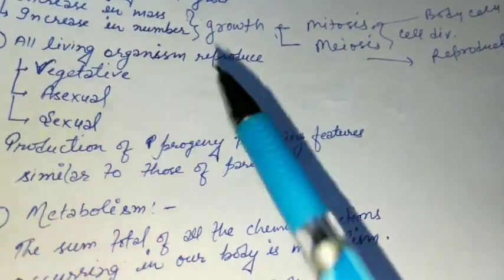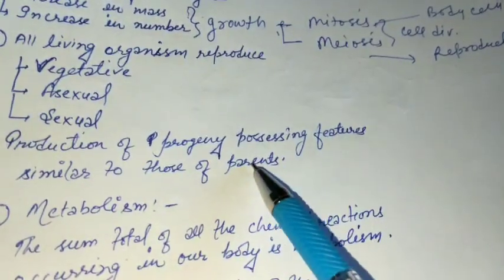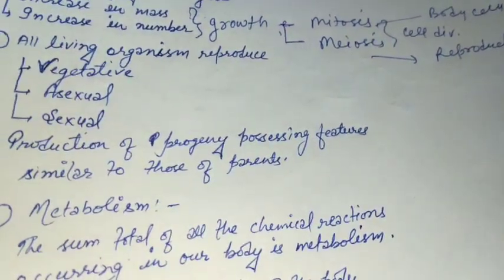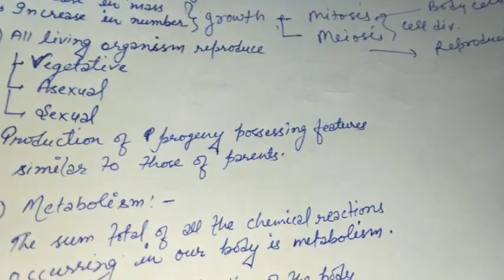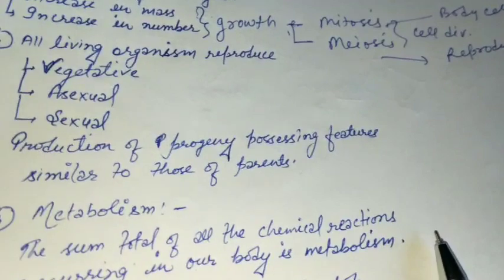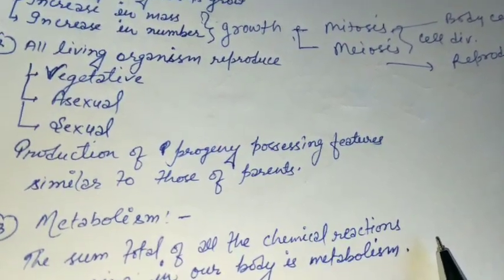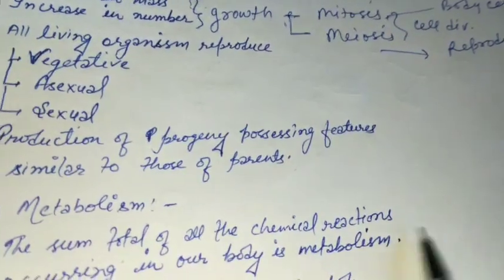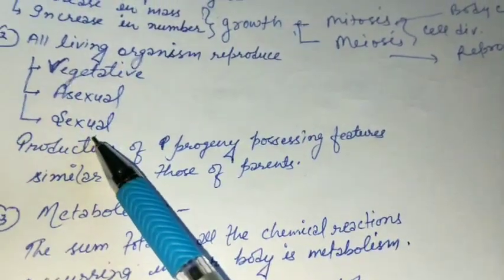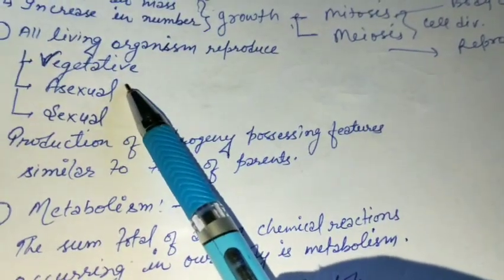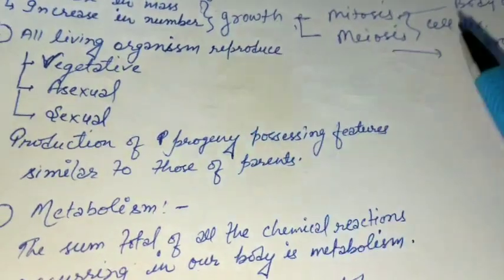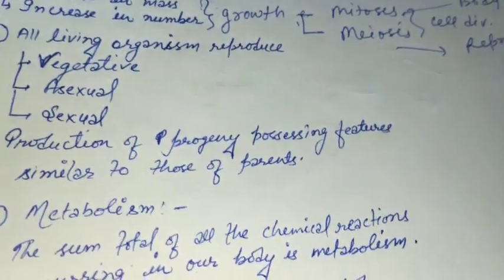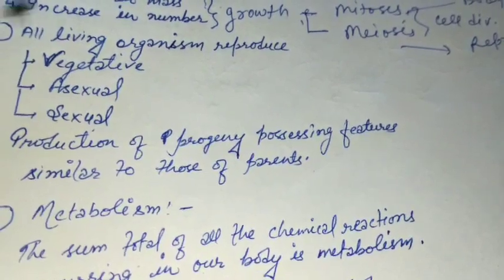Reproduction is the production of progeny possessing features similar to those of parents. Every individual has the tendency to produce offspring of similar type. Reproduction is of many types including vegetative, asexual, and sexual. In vegetative reproduction, any part of an organism directly develops into a new individual — for example, from a cutting of a rose plant, a new rose plant can form.